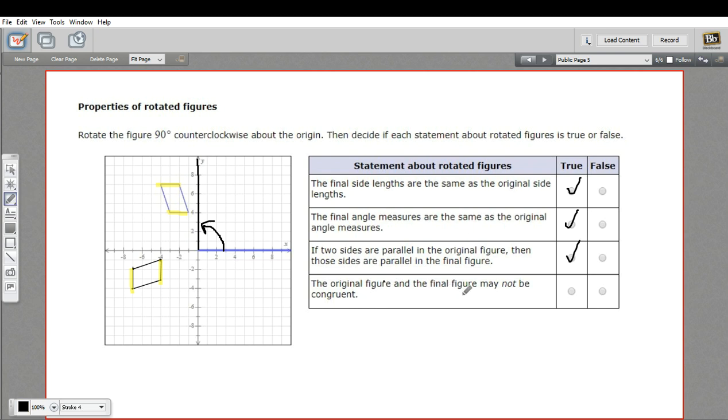And then finally, it says the original figure and the final figure may not be congruent. That is false. They are congruent. They are the same shape and the same size. Rotation, reflection, translation, they don't change the shape or size of the figure. So that's a little bit of work with the properties of rotated figures.